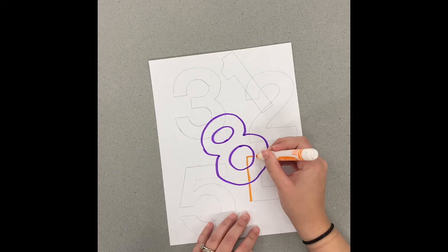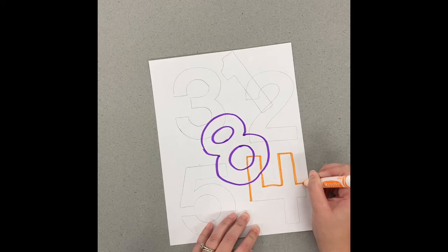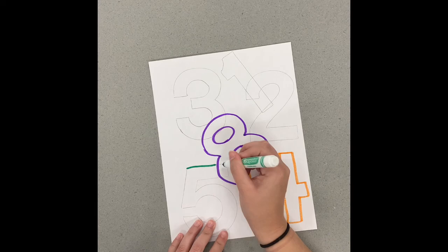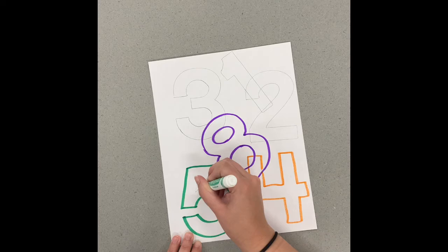You can see on the four, I kind of went around my eight instead of over top of my marker line there. Make sure I use every color from my color family, taking my time tracing with my marker.